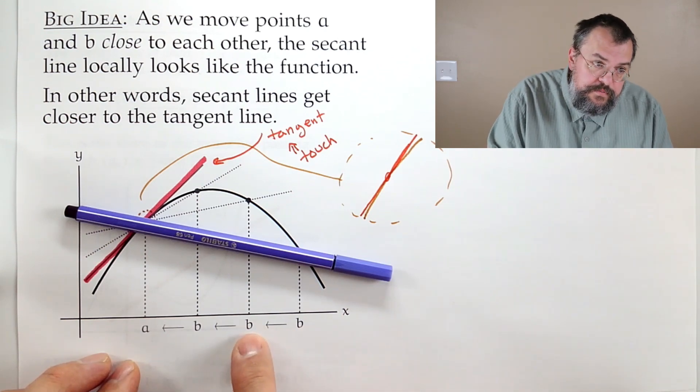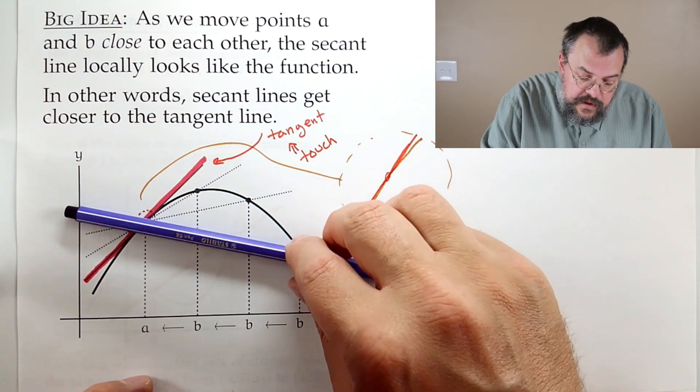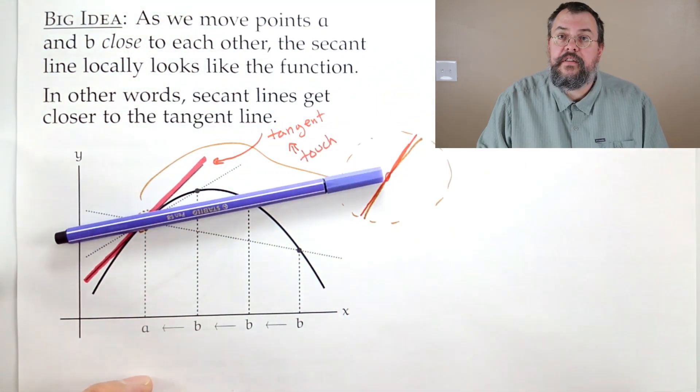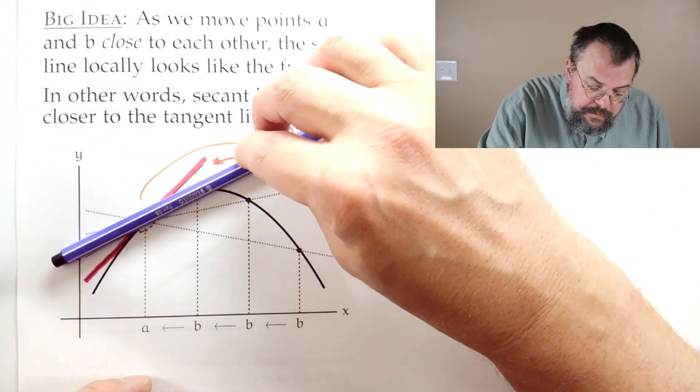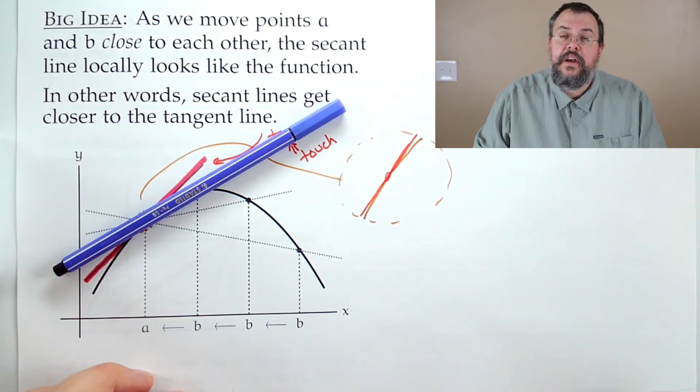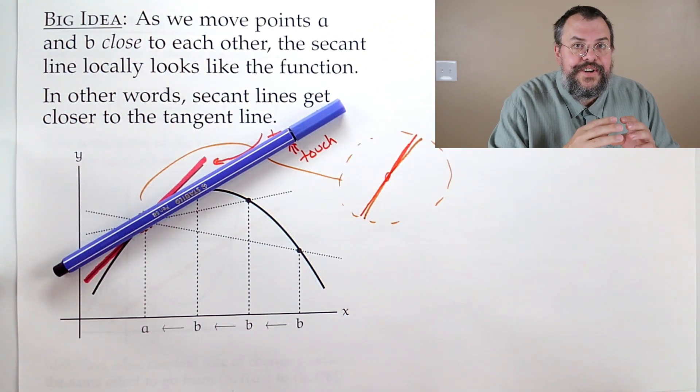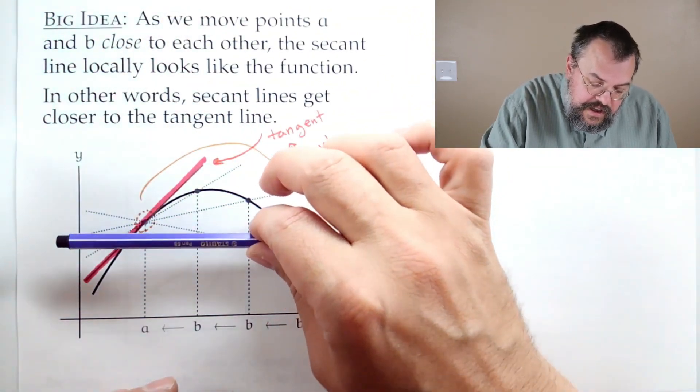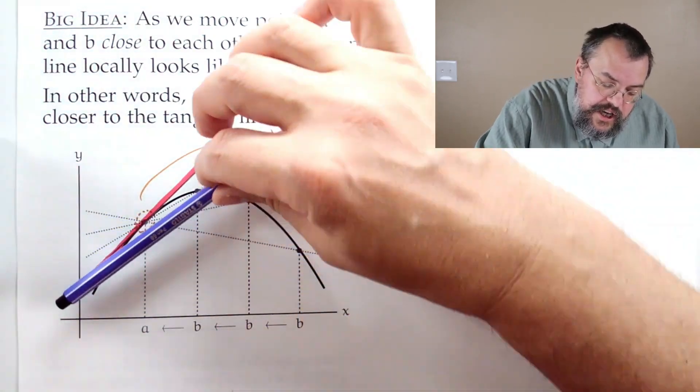But that's because we're looking at an A and a B that are far apart. See, suppose I were to move B closer. What would the effect be? Well, what the effect would be is that it would get a little bit better as an approximation. How about if I move B even closer? It'll get even a little bit better still as an approximation. And how about if I just keep moving B closer and closer and closer? Well, what's going to happen is that these secant lines are going to swing in right into that tangent line.